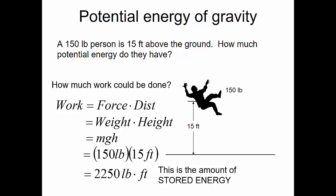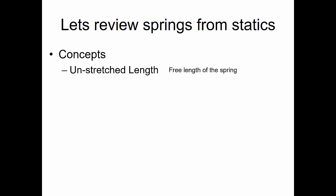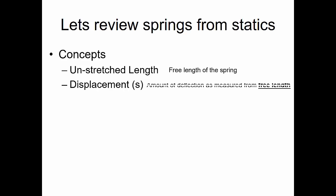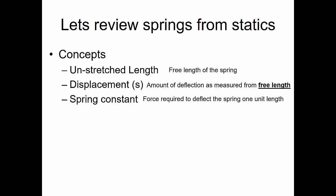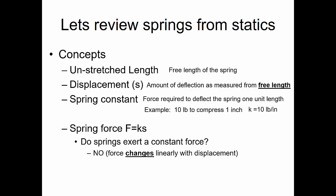Let's review springs. The unstretched length is the free length of the spring — its length when unattached, not compressed or stretched. Displacement is how much a spring is compressed or stretched from its free length. The spring constant is the force required to deflect the spring one unit length; for example, 10 pounds compressing a spring one inch gives a spring constant of 10 pounds per inch. Force in a spring equals spring constant times displacement. Springs do not exert a constant force — it changes linearly with displacement.